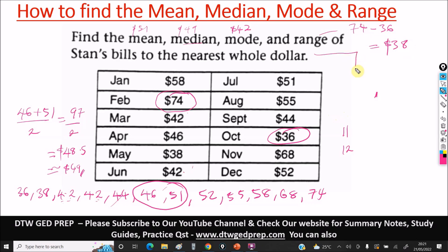When you type your answer in the box, make sure to include your units — put the dollar sign and 38. Always include your units of measurement for whatever you are calculating. And that's how you find the mean, median, mode and range.